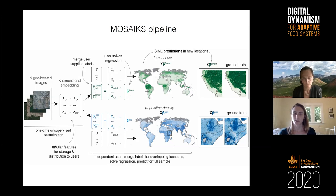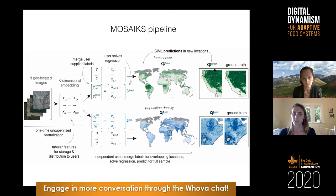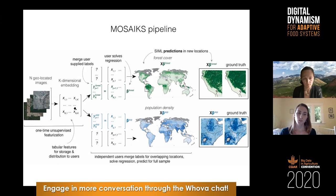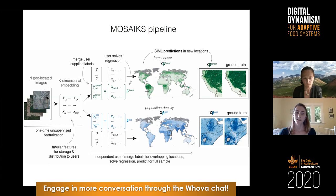For all locations where we don't have ground truth data about forest cover, we still have the feature vectors because we still have imagery covering those regions. We use the mapping learned from where we did have labels to predict all the regions where we didn't have data and scale out these maps. Here you see worldwide predictions of forest cover, as well as an inset comparing predictions to ground truth. The same process a researcher uses to predict forest cover is identical to what another researcher might use to predict population density — the same feature embedding, the same linear regression.